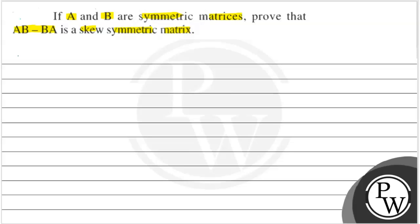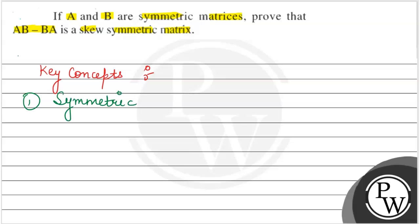The first key concept used is the symmetric matrix. In the case of a symmetric matrix, if matrix A is given, then A is equal to A transpose. In the case of transpose, the rows become columns and columns become rows.